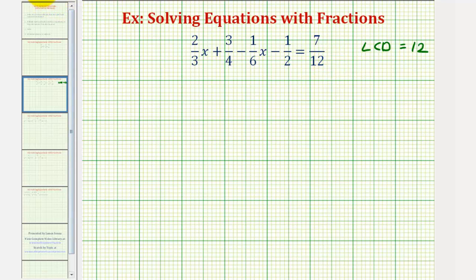So now we're going to rewrite each fraction so that it has a denominator of 12. So for our first fraction, 2/3 x, this is equivalent to 2x over 3. But because we want a denominator of 12 and 3 times 4 equals 12, we're going to multiply both the numerator and denominator by 4, plus 3/4. And since 4 times 3 equals 12, we'll multiply the numerator and denominator by 3.